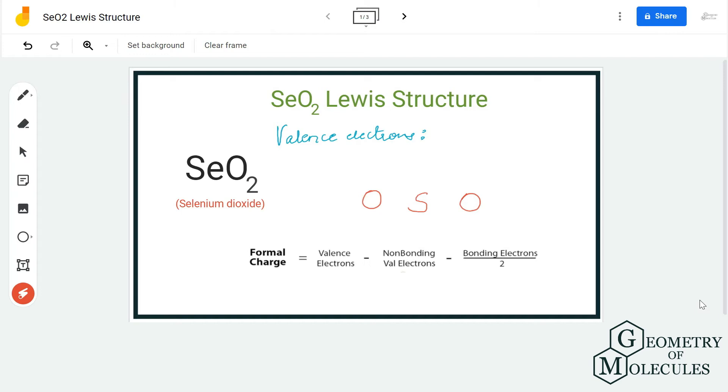Hi guys, welcome back to our channel. In today's video we are going to determine the Lewis structure for SeO2 molecule. It's the chemical formula for selenium dioxide. To know the Lewis structure of this molecule, we are first going to look at the total number of valence electrons.